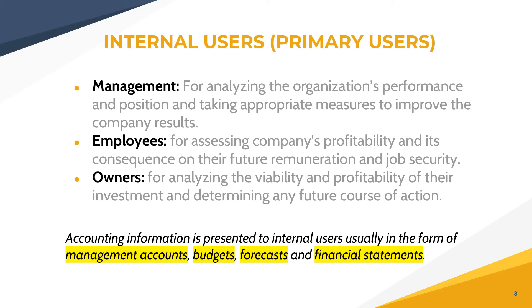Let's start with management. They use accounting information for analyzing the organization's performance and position through financial statements — the statement of financial position and the statement of comprehensive income or income statement — and for taking appropriate measures to improve company results. If they've already seen the financial performance for one year, they can assess whether the business is doing well or if they need to improve, like increasing selling prices or cutting expenses.